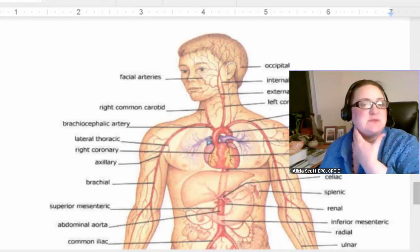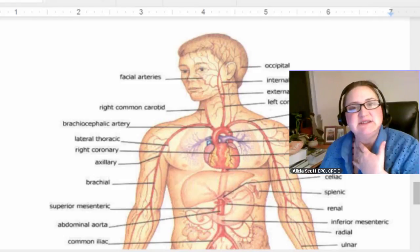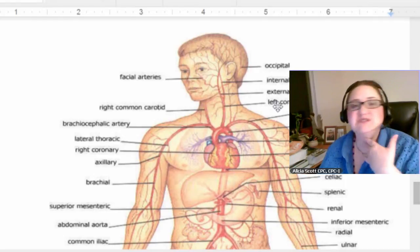Those carotid arteries, remember they go up and through your neck and they do those studies to see if you've got blockage there. And if you've got blockage there, you're needing to go and have some work done because you could have a stroke. So, carotid, we know is in the neck.